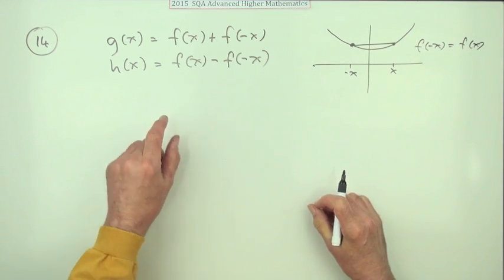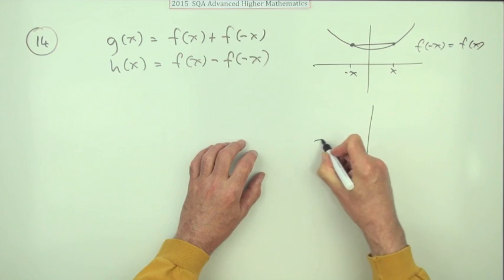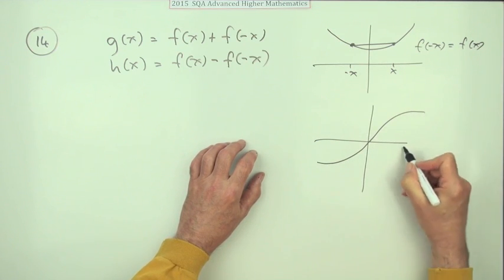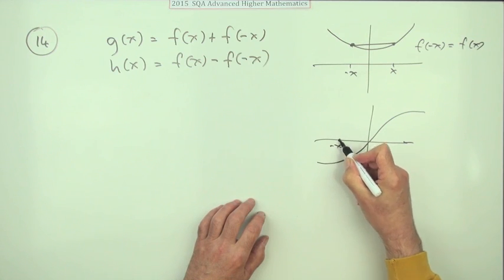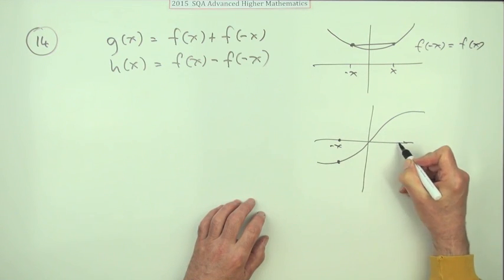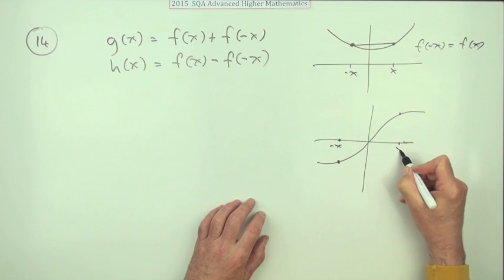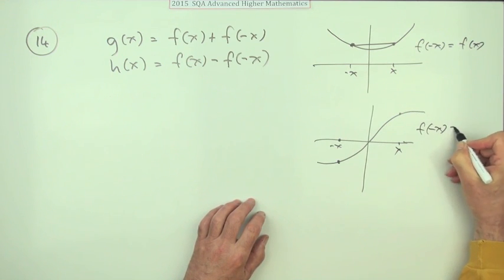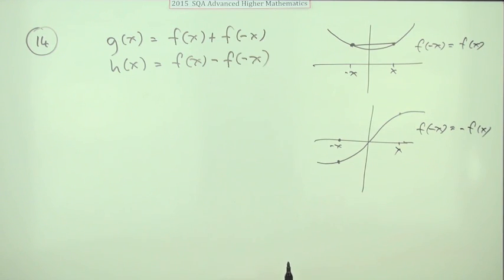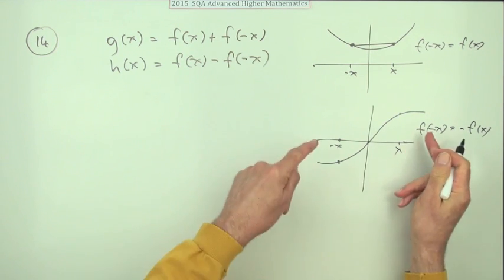An odd function has the value at negative x is the opposite but the same value—it's the negative of the value of x. The value at negative x is the negative of the value at x, so again it's got symmetry but it's got half-turn symmetry.